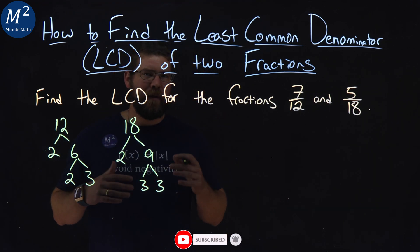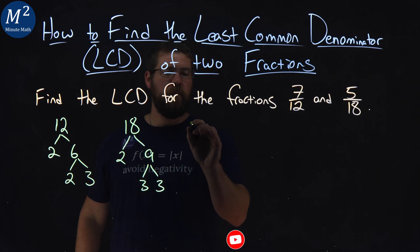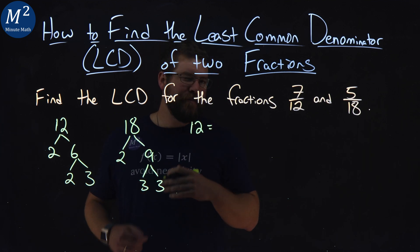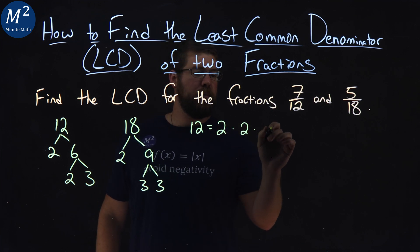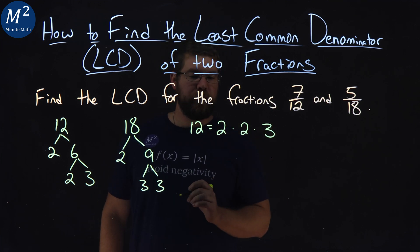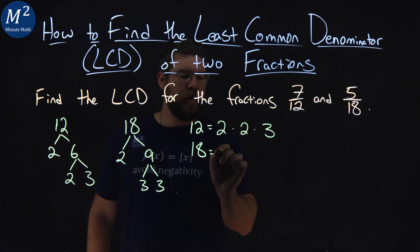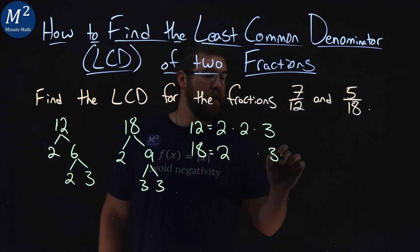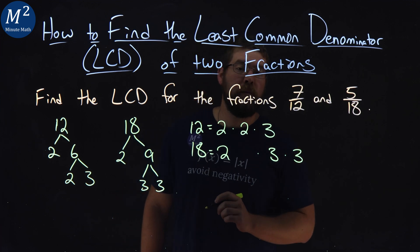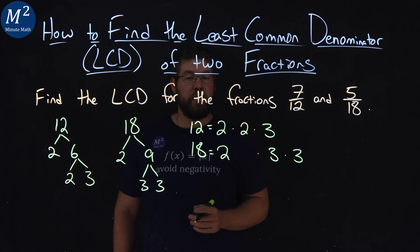So now, let's go write this like we've done before. Let's write the factors of each number. 12 is 2 times 2 times 3. 18 is 2 times 3 times 3. If you remember from before, we lined up the factors.